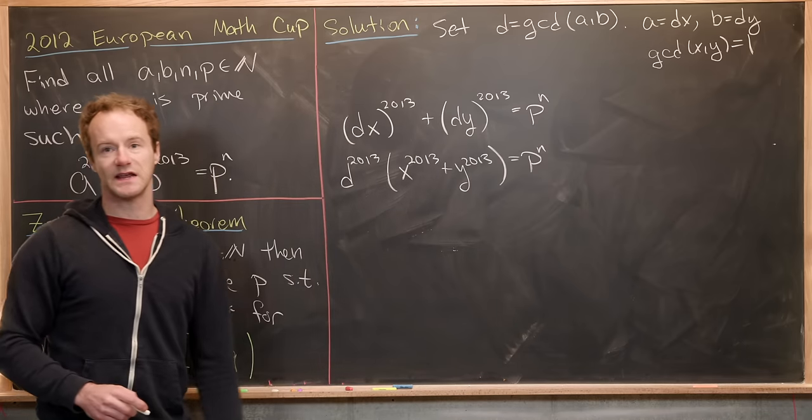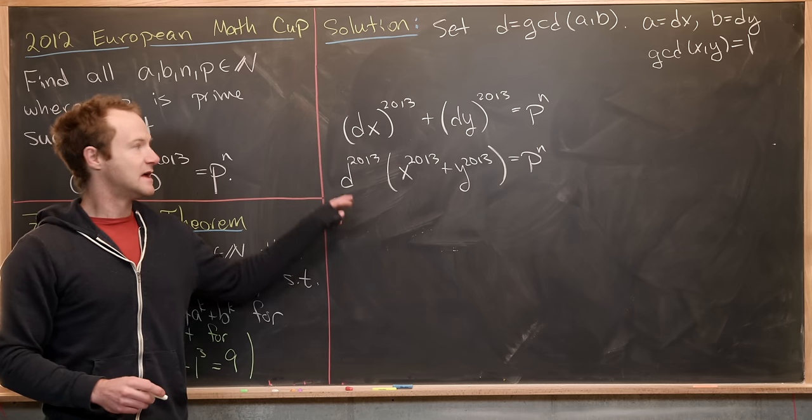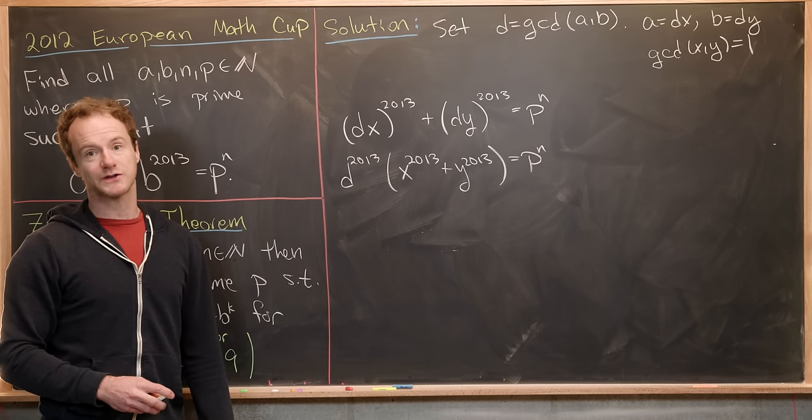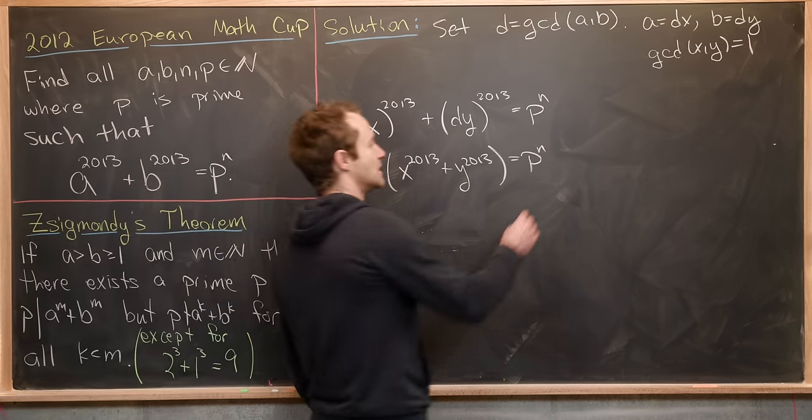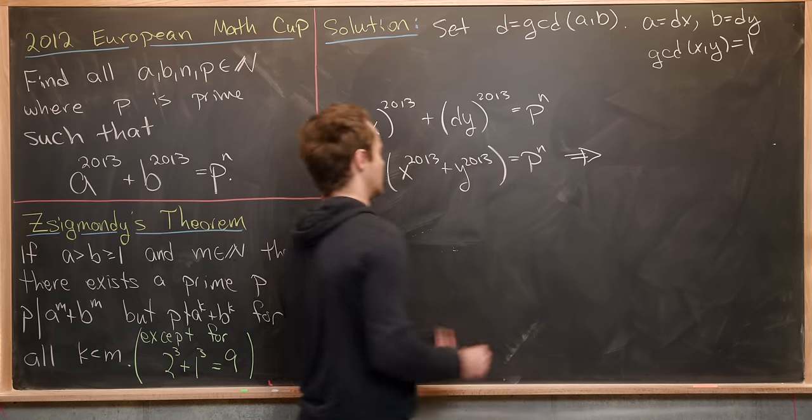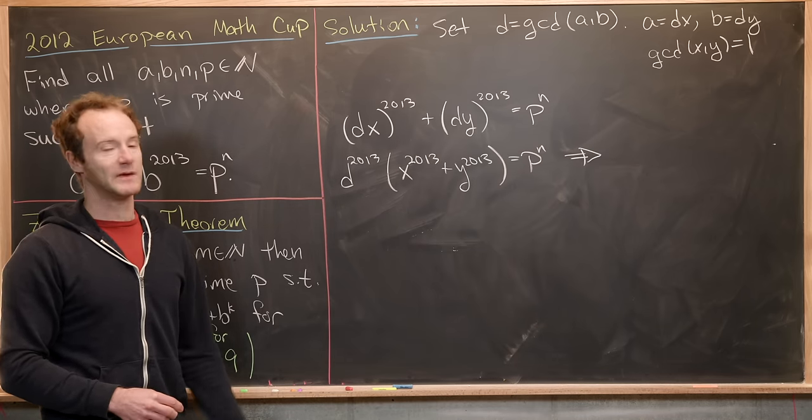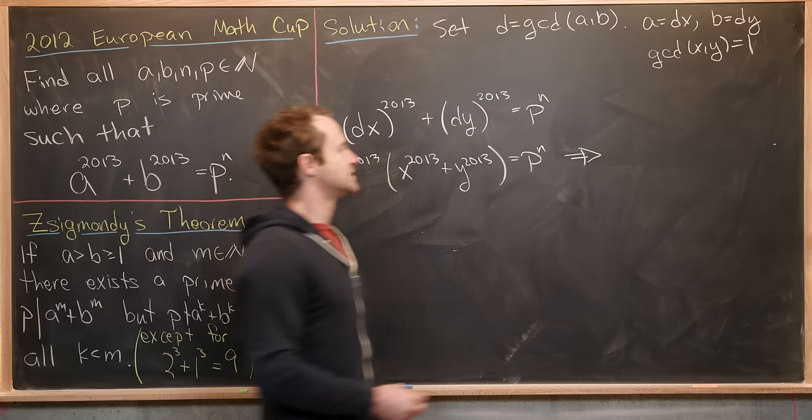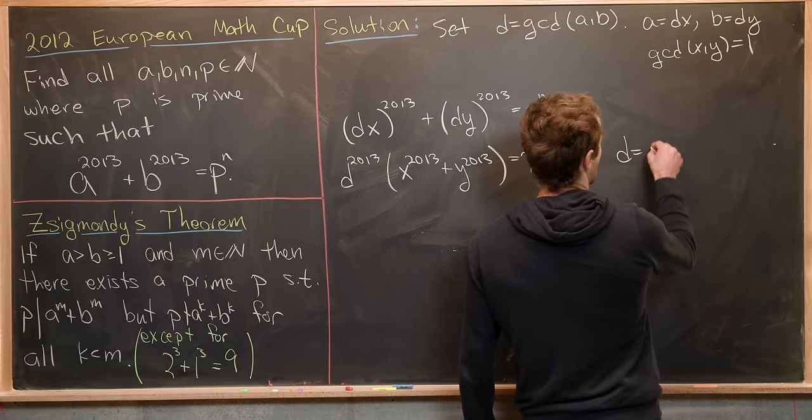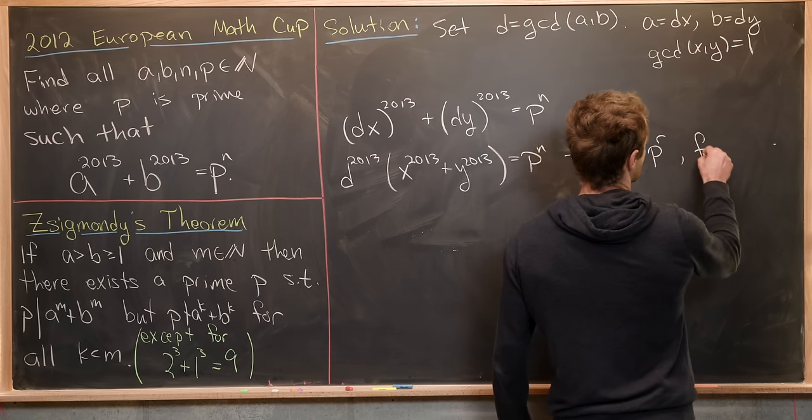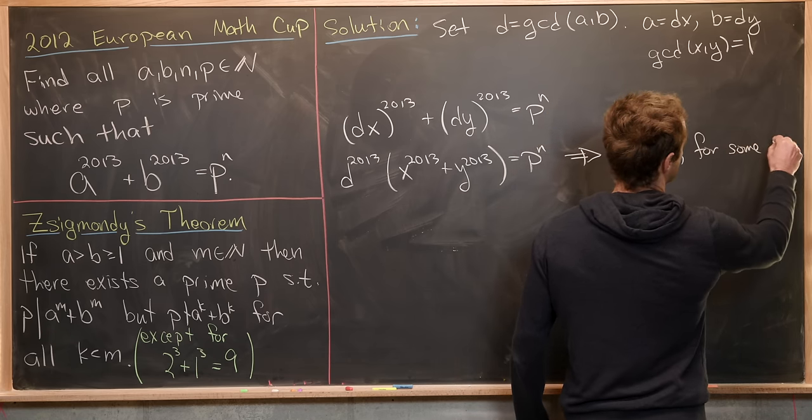So notice the right-hand side is a power of this prime. That makes the left-hand side also a power of this prime. But that means all multiplicative components of the left-hand side are a power of this prime, including D. So that means we can write D as P to the R for some R.